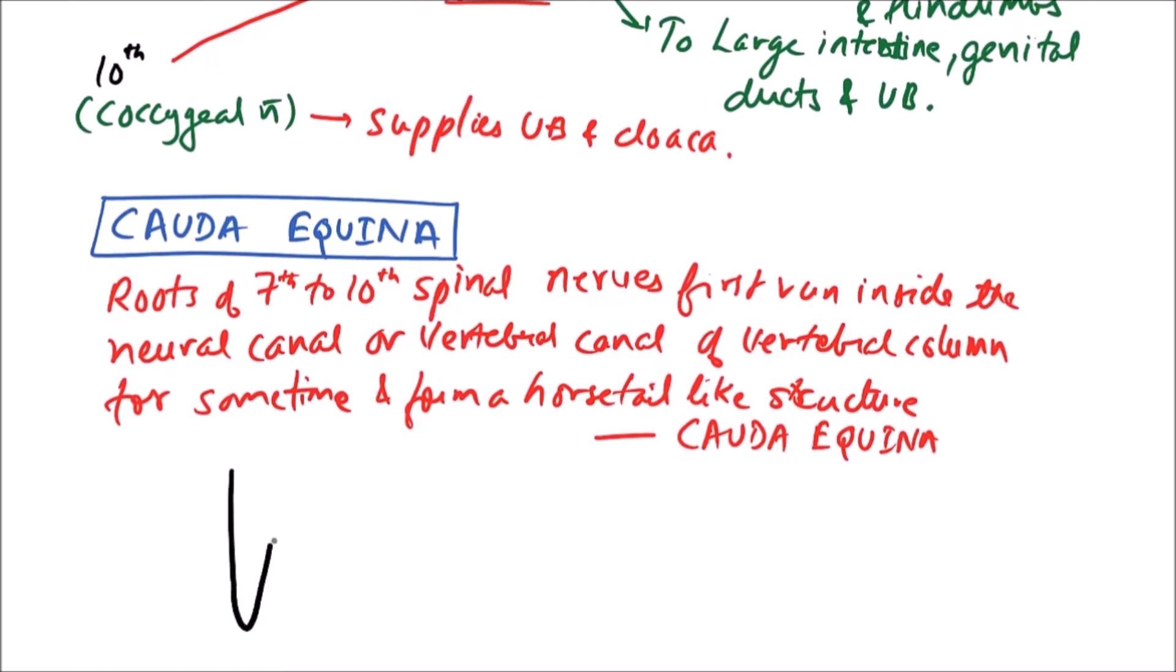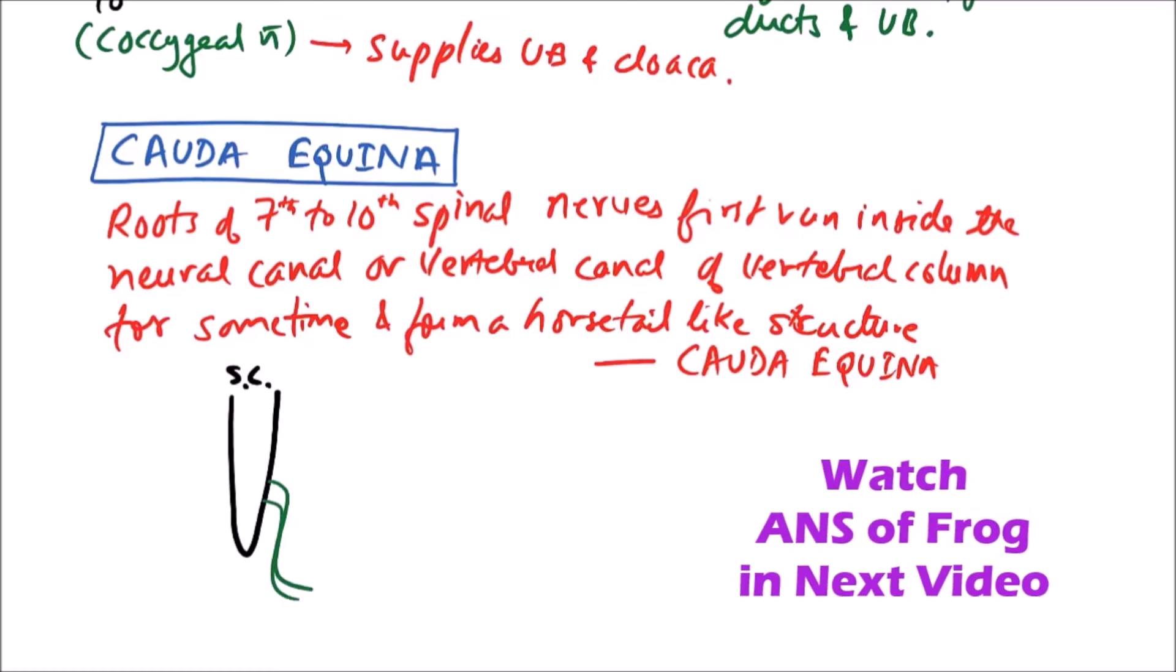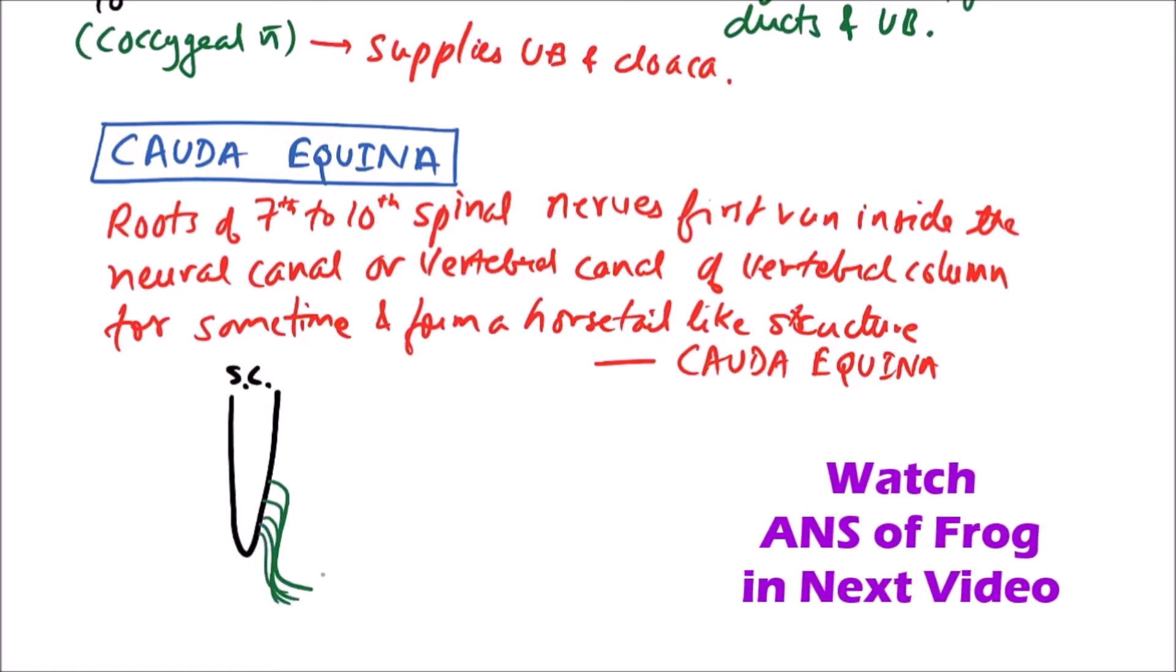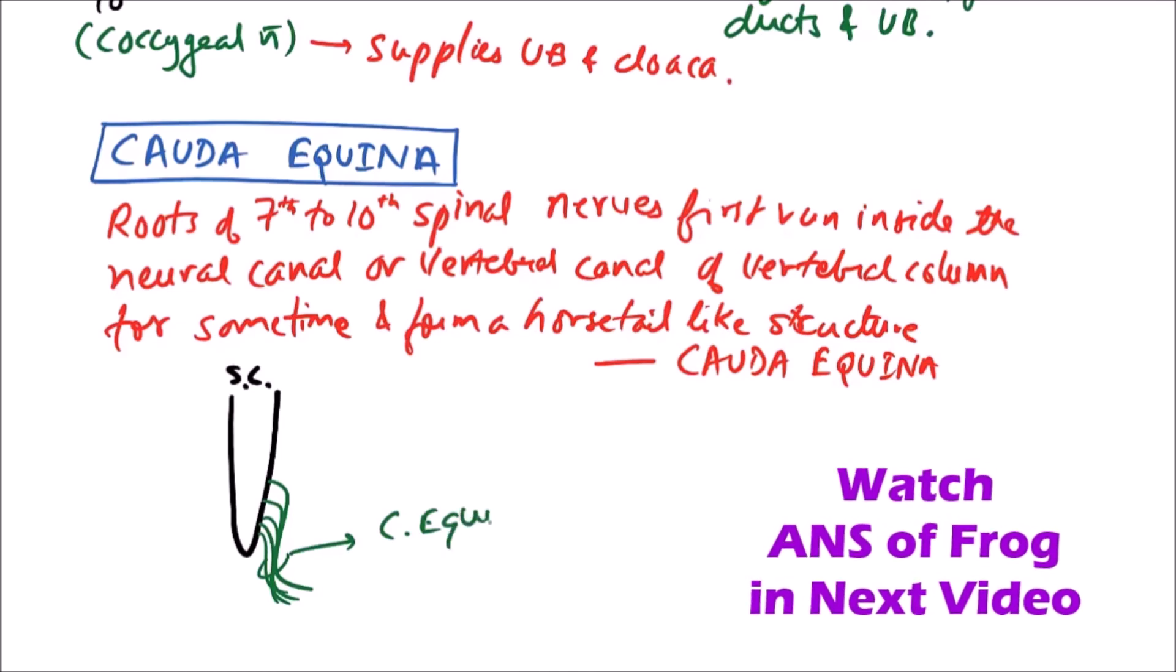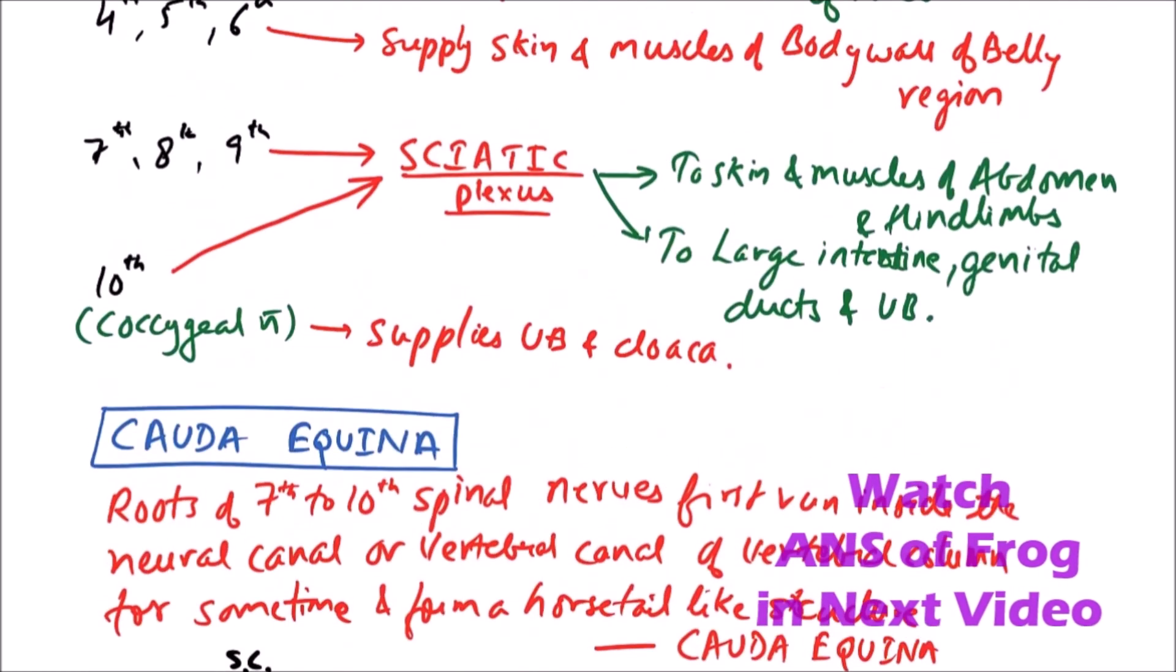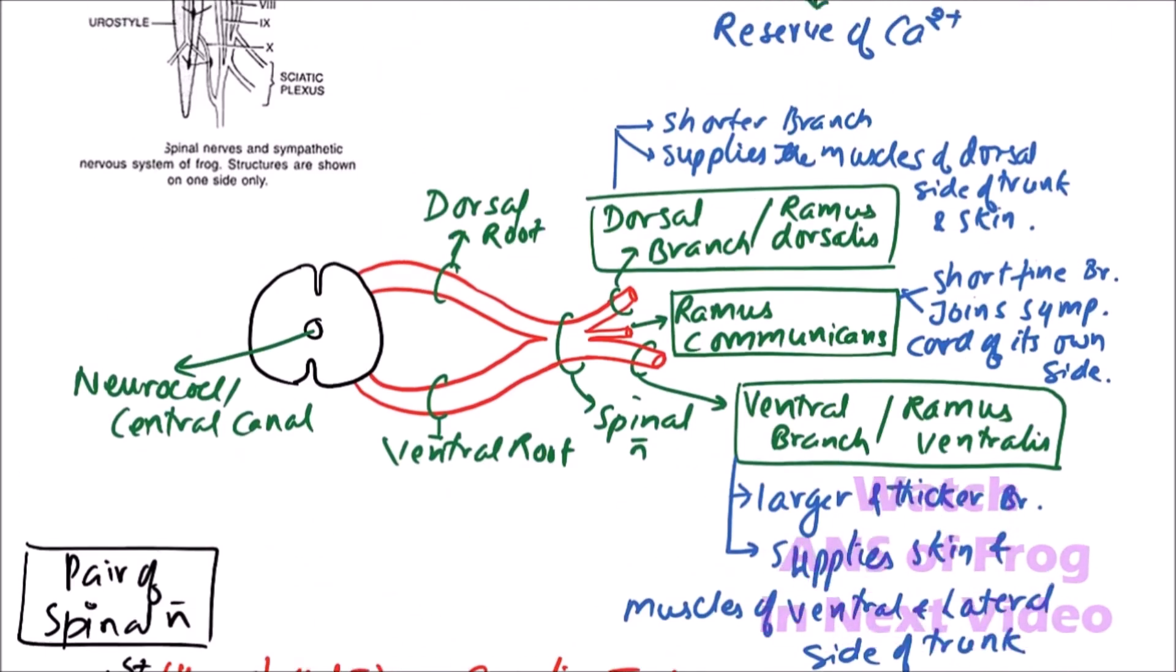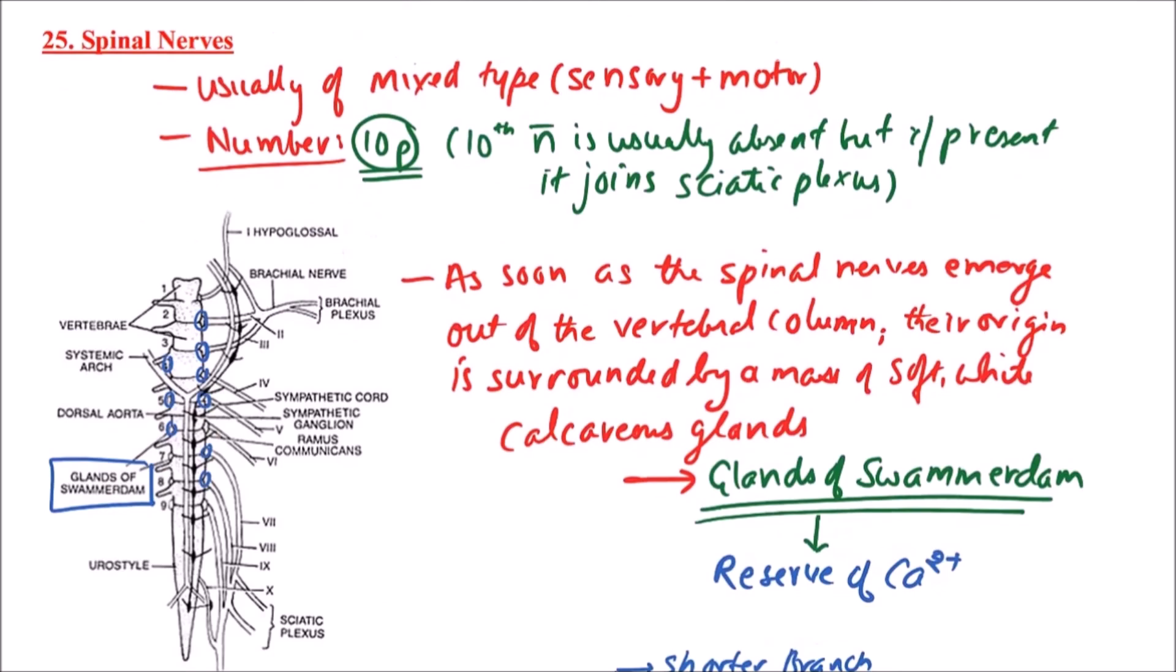So this will give appearance like this: this is the spinal cord, and the terminal spinal nerves will move like this, so this will form cauda equina. So this is all about the spinal nerves of frog. Thanks for watching this video.